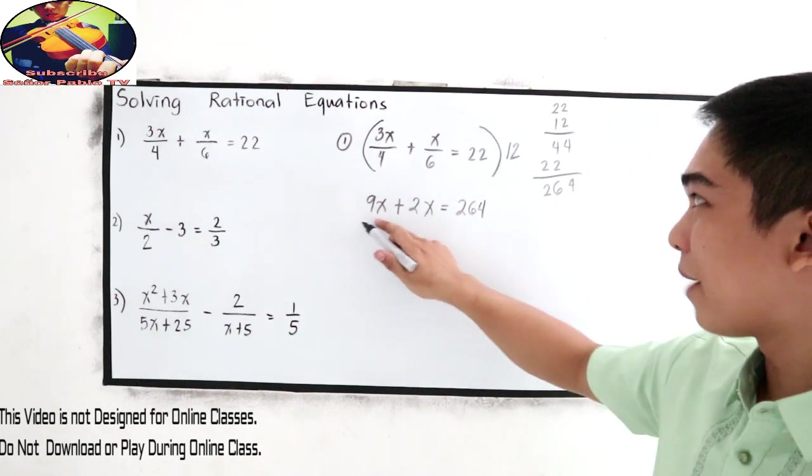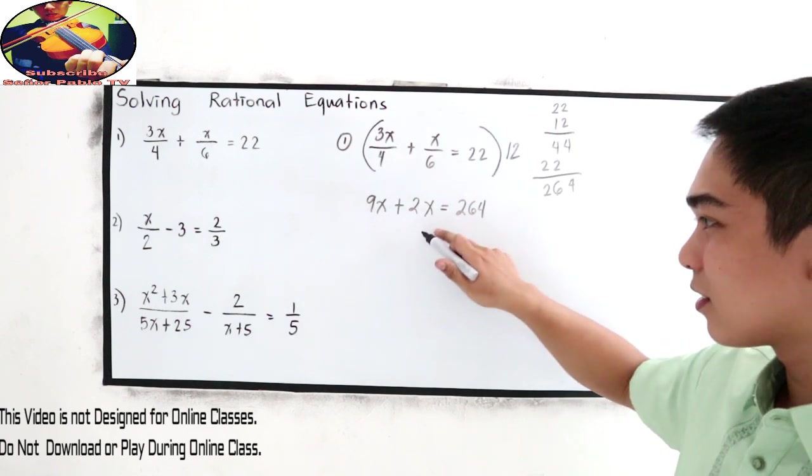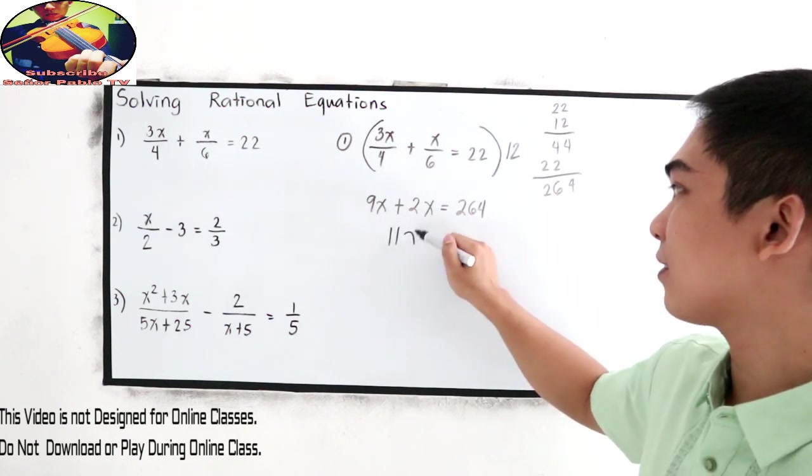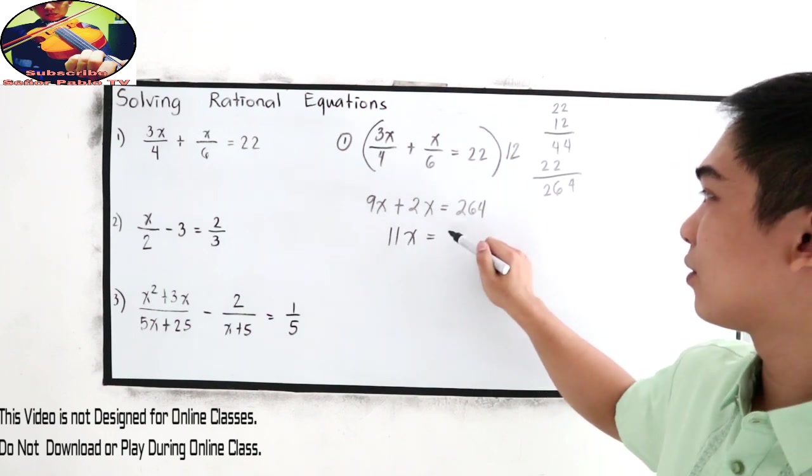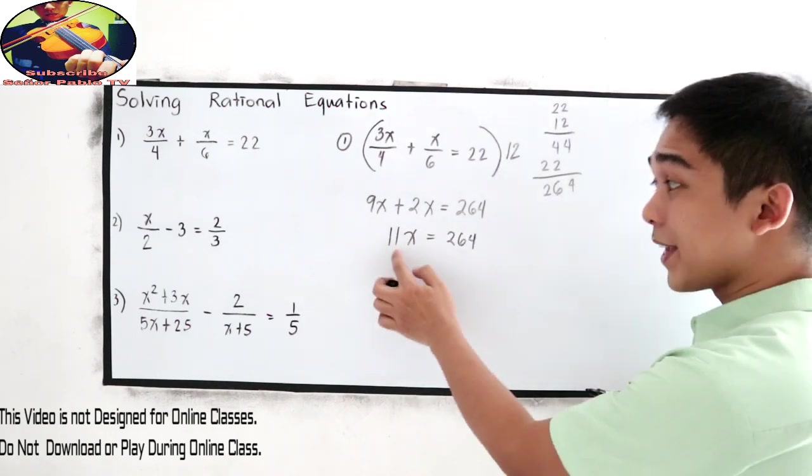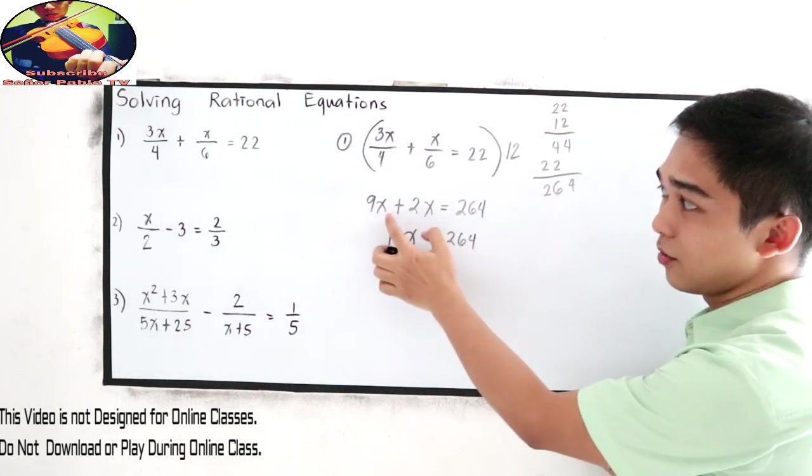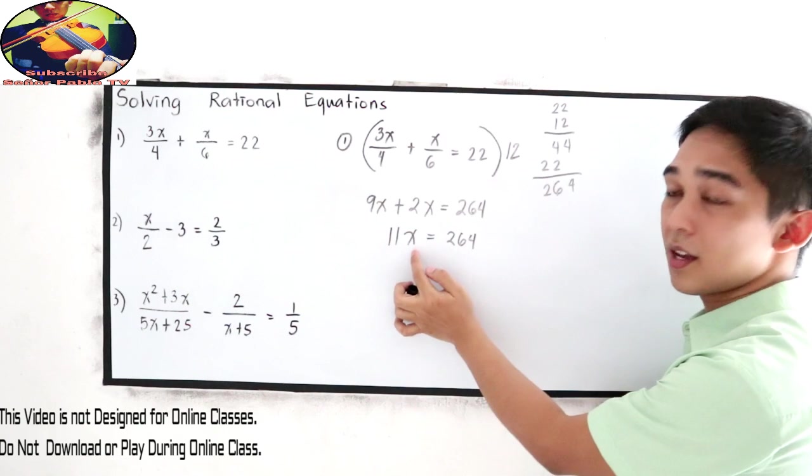Then combine like terms. So we have 11x is equal to 264. Why 11? 9 plus 2, that is 11. Combining like terms, just copy x.